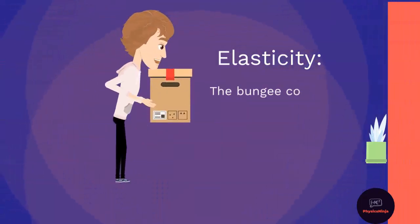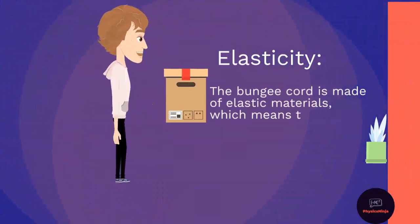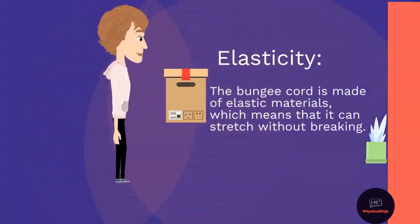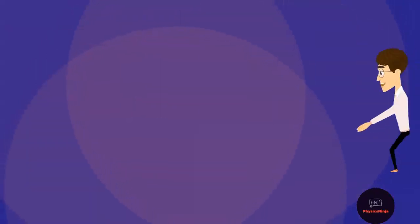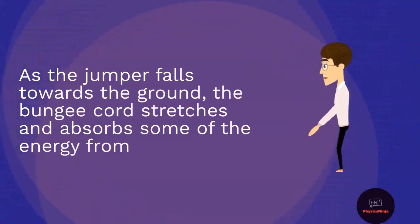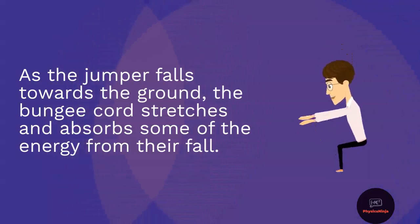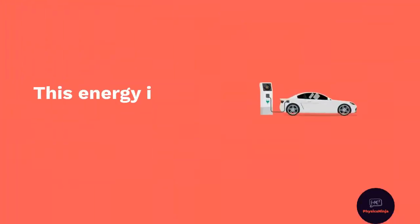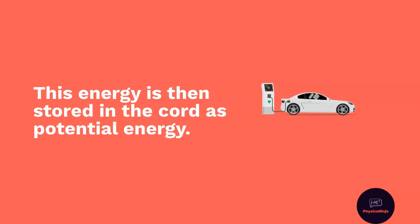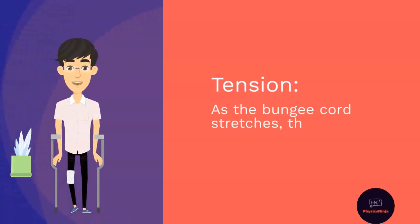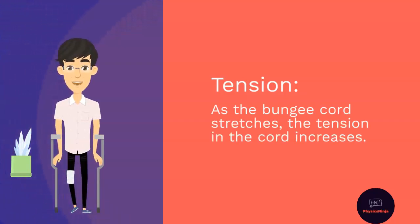The bungee cord is made of elastic materials, which means that it can stretch without breaking. As the jumper falls towards the ground, the bungee cord stretches and absorbs some of the energy from their fall. This energy is then stored in the cord as potential energy.